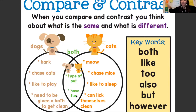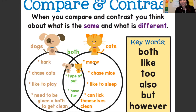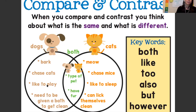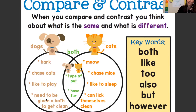So dogs bark. We know cats meow. Dogs chase cats. Cats like to chase mice. Dogs like to play. Cats like to sleep. Dogs need to be given a bath to get clean. Cats can lick themselves clean.